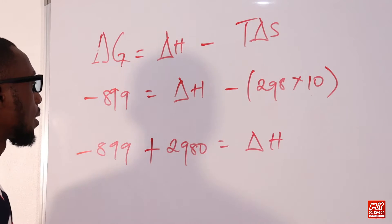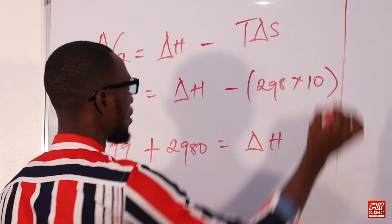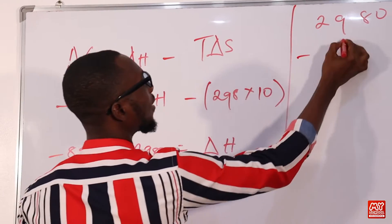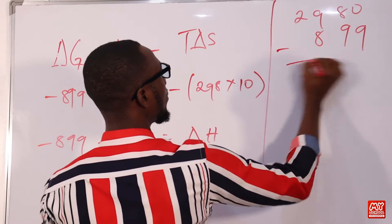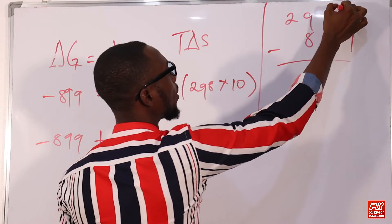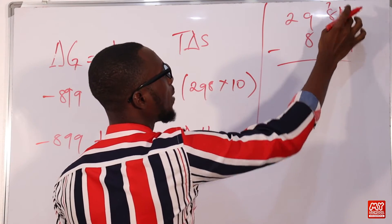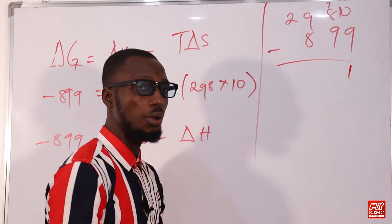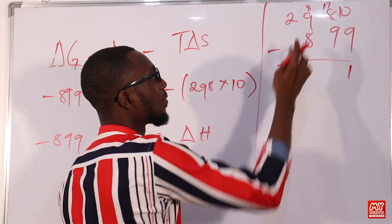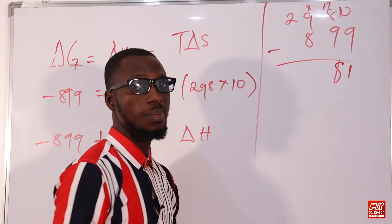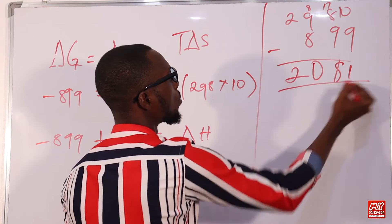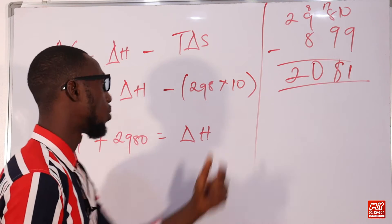Continuing the calculation: ΔH = −899 + 2980. Performing the subtraction: 2980 − 899. Working through the arithmetic — 10 minus 9 is 1, 17 minus 9 is 8, 8 minus 8 is 0, leaving 2 — gives 2081. So ΔH = 2081 J/mol.